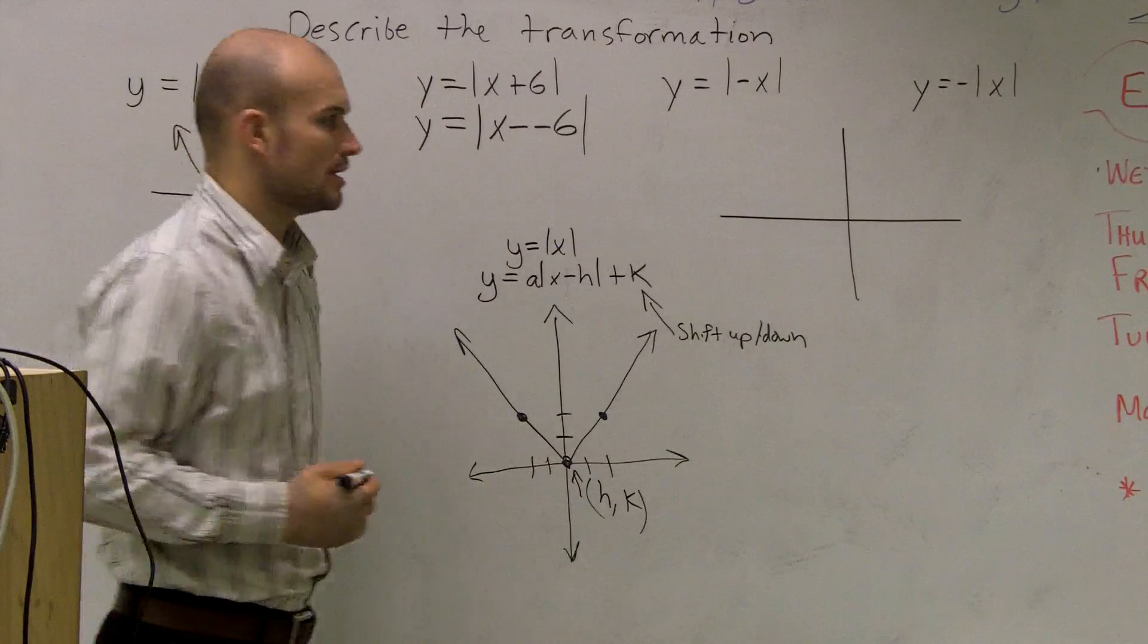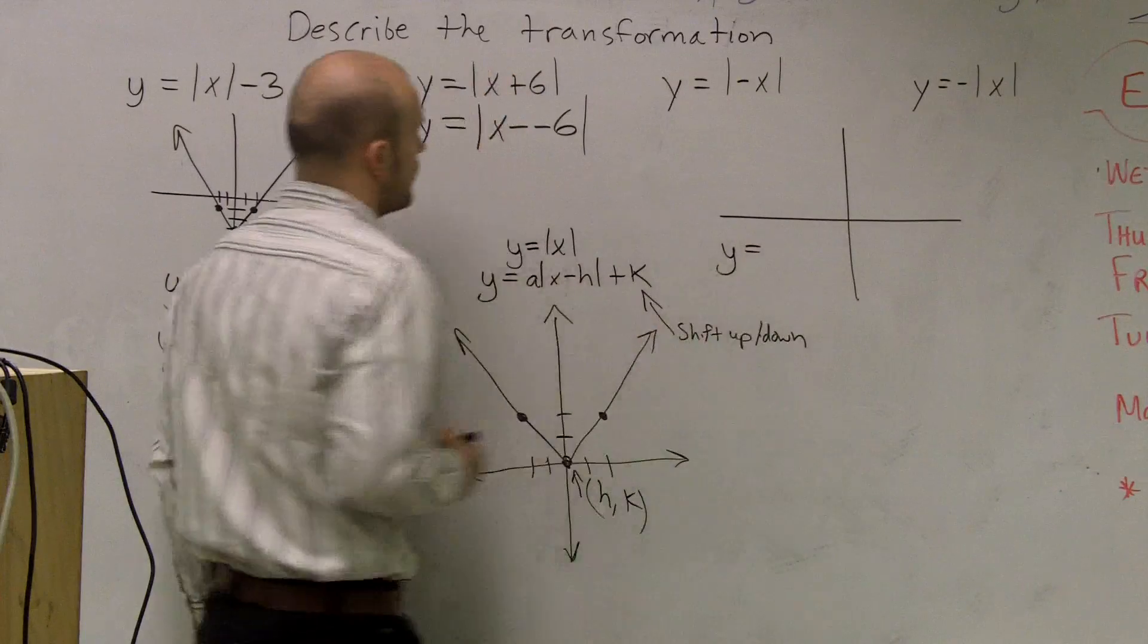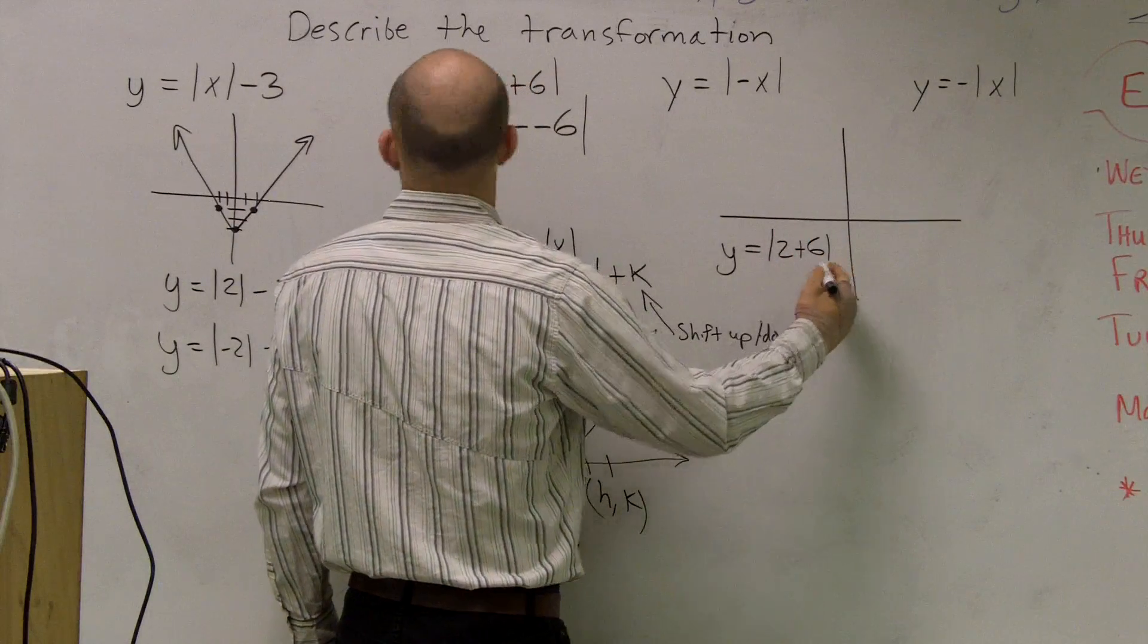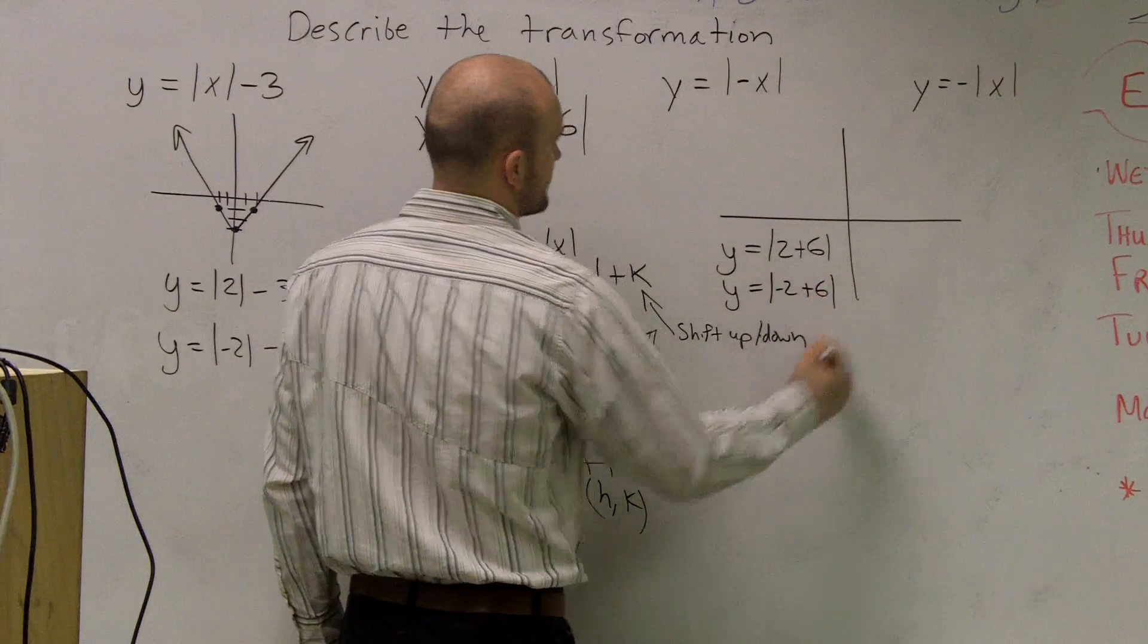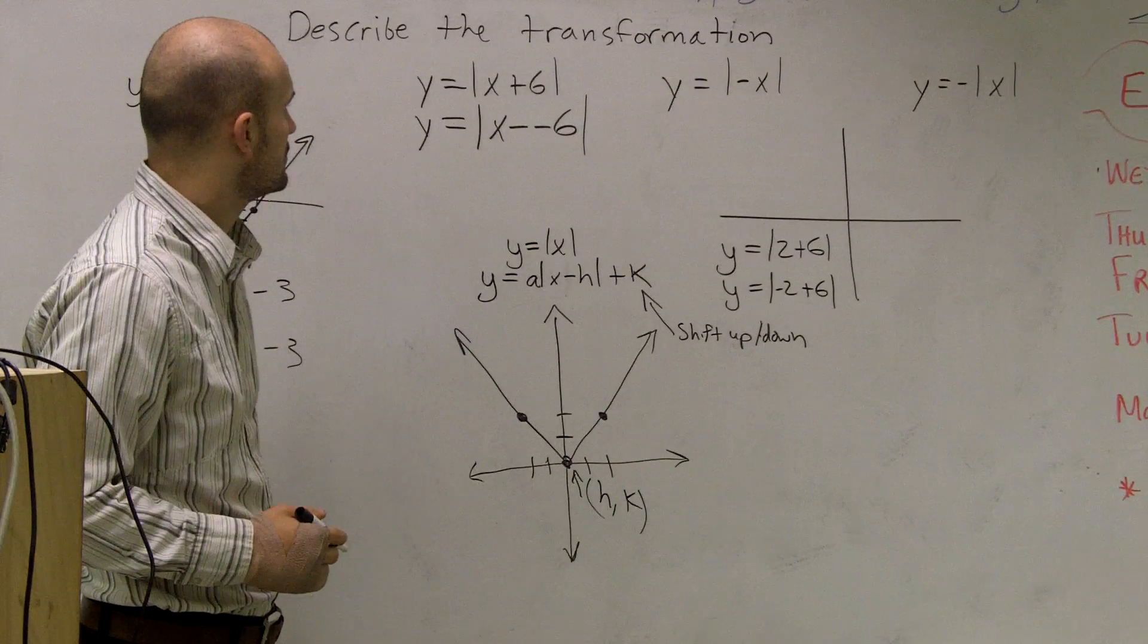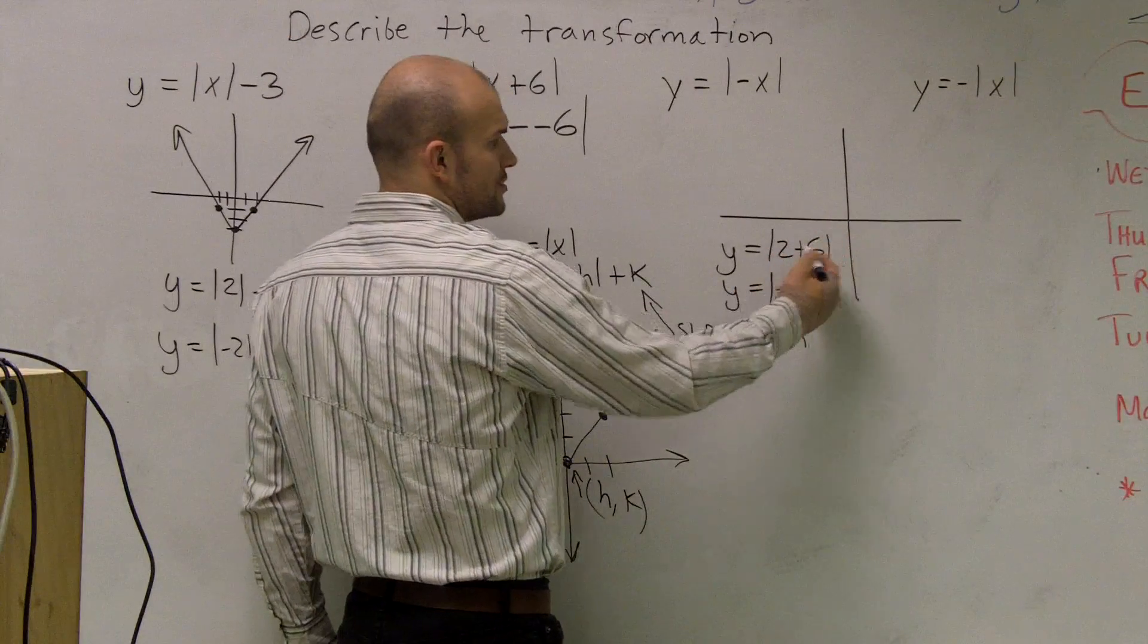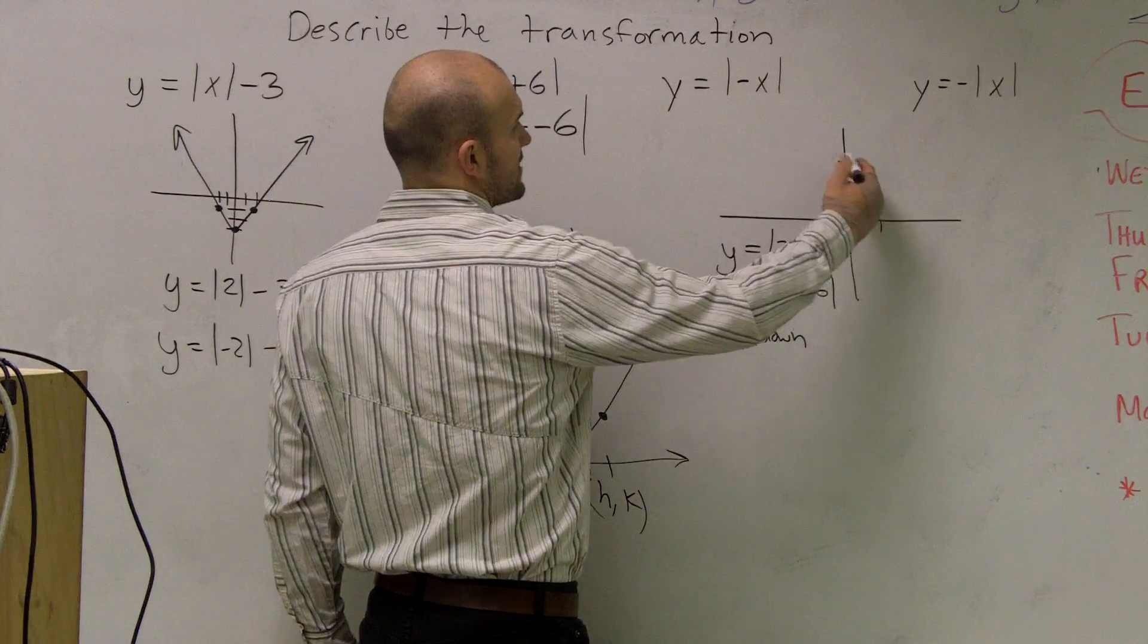So let's pick our normal graph here. Let's go and pick our two points. Let's pick y equals absolute value of 2 plus 6. And let's do y equals absolute value of negative 2 plus 6. So 2 plus 6 is 8, and negative 2 plus 6 is 4.